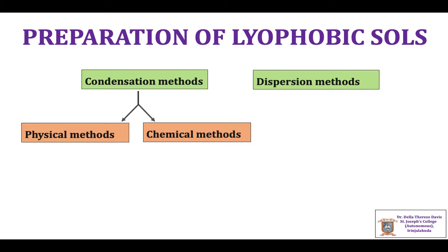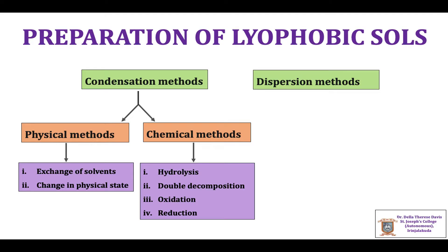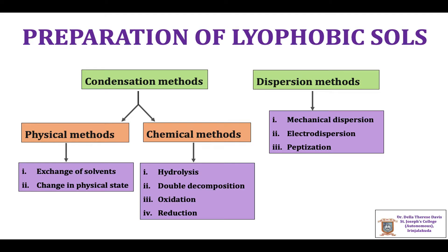Physical methods are of two types: exchange of solvents and change in physical state. Chemical methods are hydrolysis, double decomposition, oxidation and reduction methods. In the dispersion methods, the large particles of the material to be dispersed are broken down to smaller particles of colloidal dimensions in the presence of a dispersion medium and a small amount of suitable stabilizing agent such as an electrolyte. Dispersion methods include mechanical dispersion, electro dispersion and peptization.